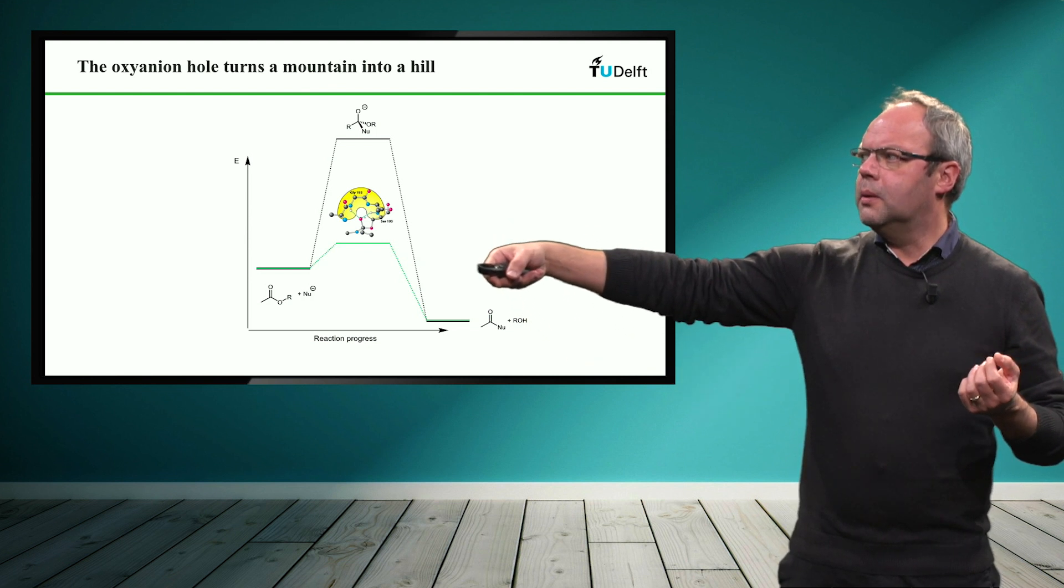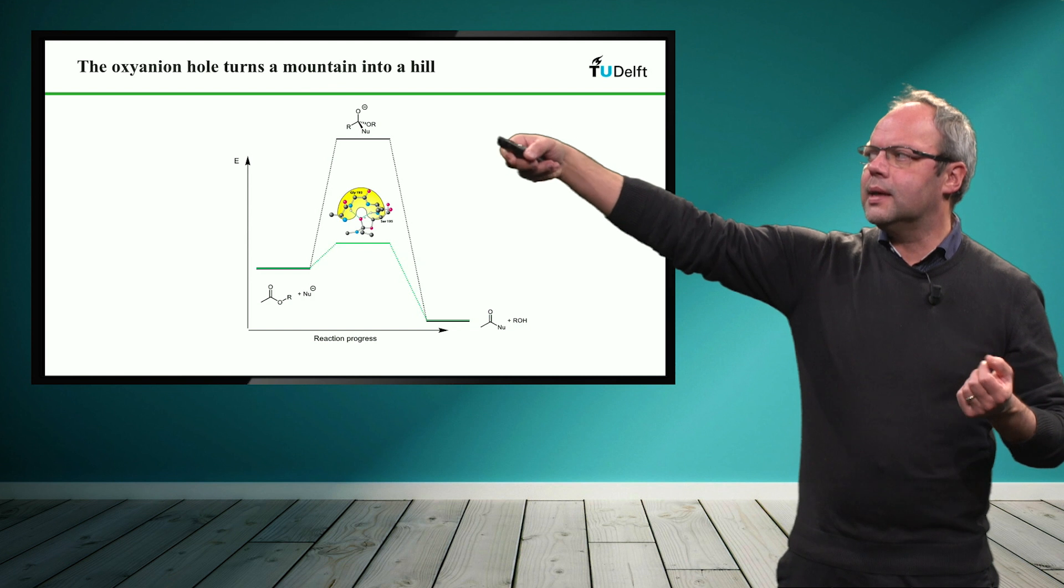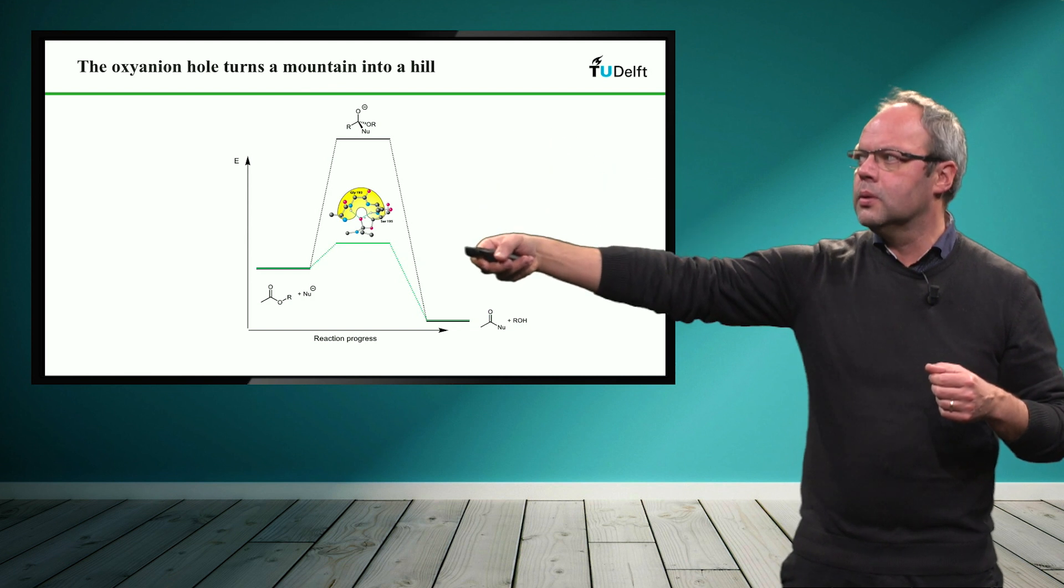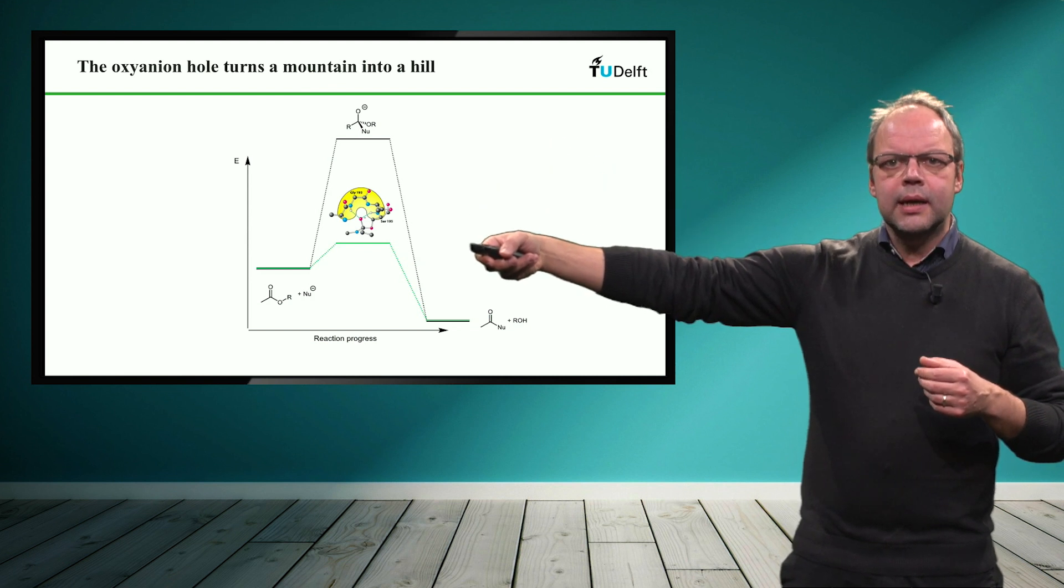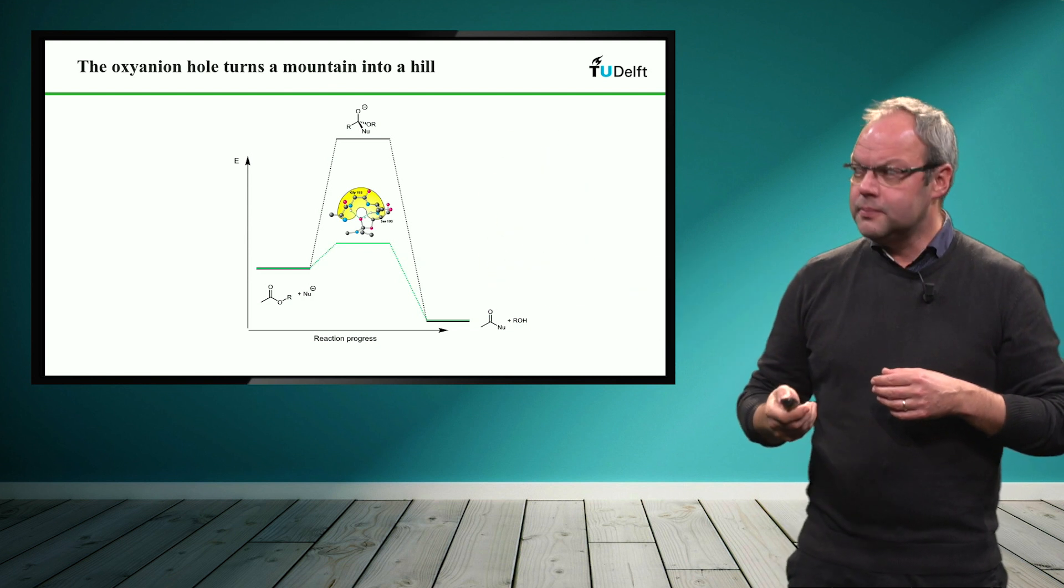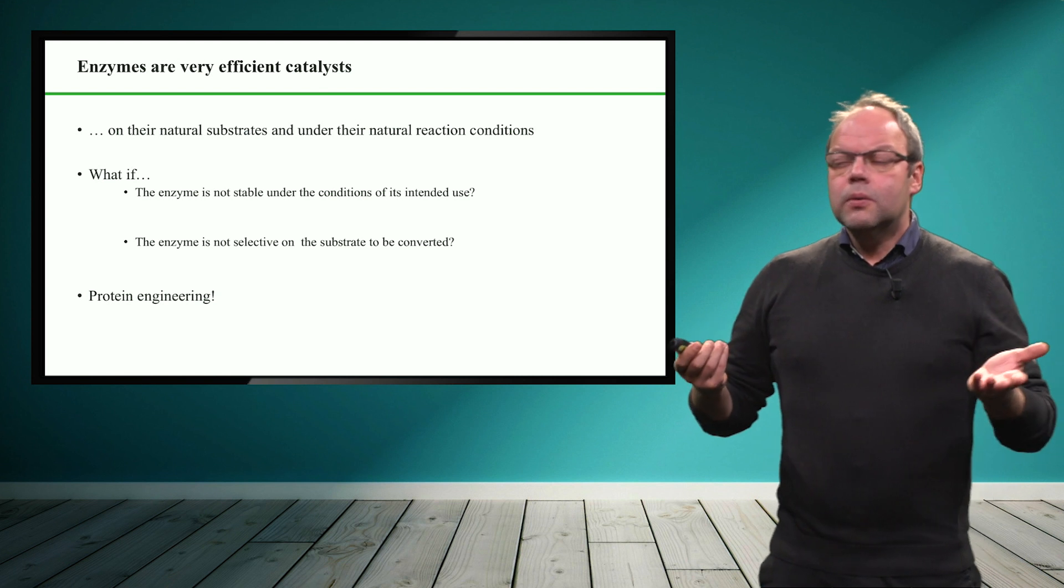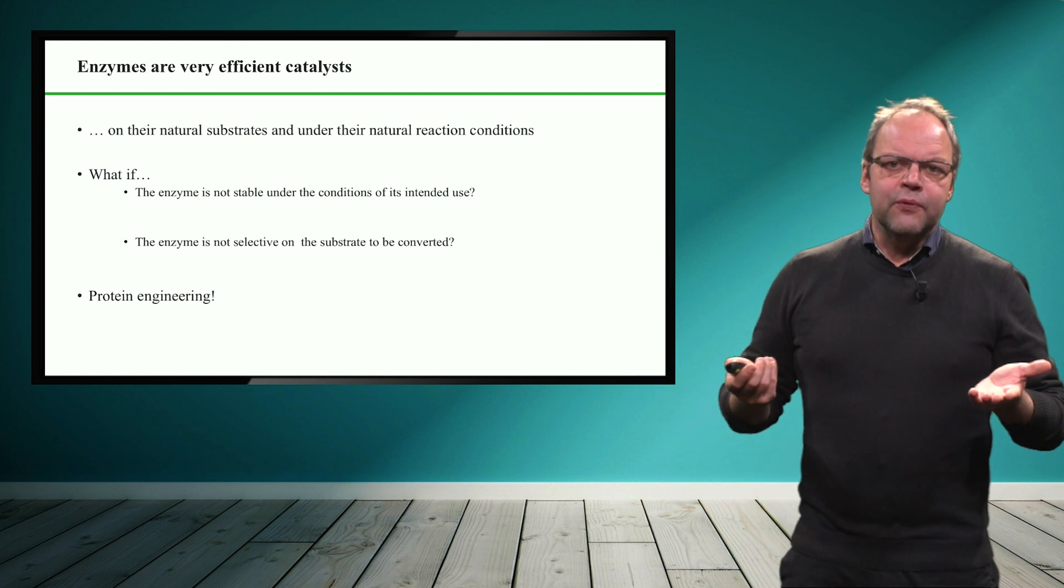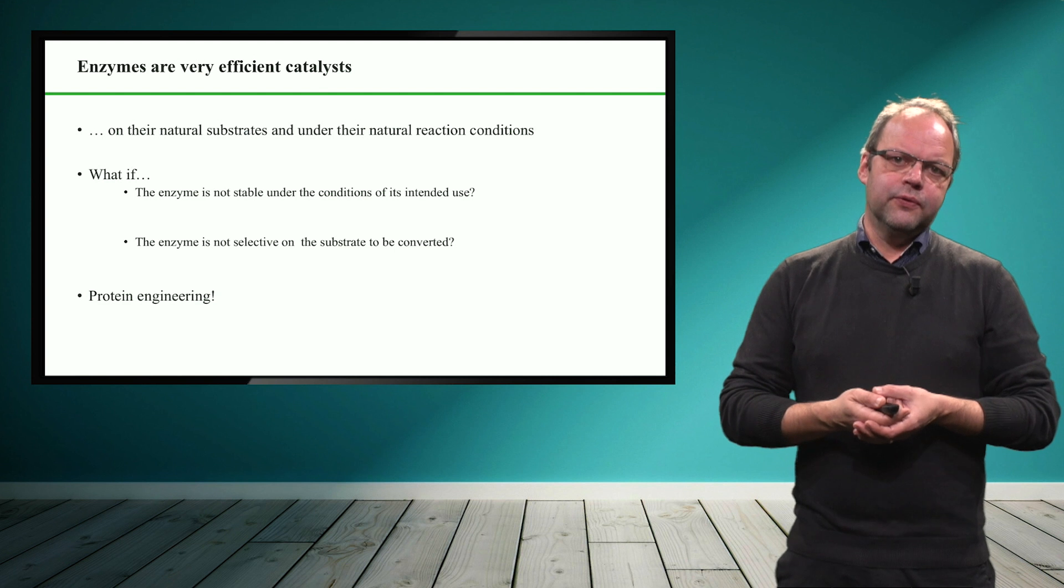So you see that compared to the reaction without catalyst, without the oxyanion hole, the reaction with the oxyanion hole is much faster because the energy of the intermediate is much lower.